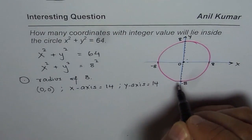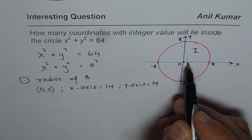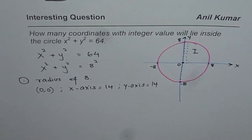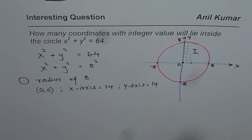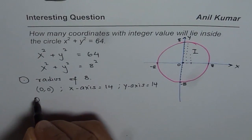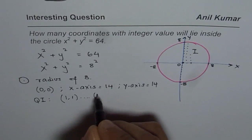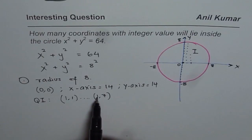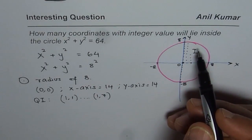To count the interior points, let us consider quadrant 1. Starting with x=1, we can have y from 1 to 7 since 1² + 7² = 1 + 49 = 50, which is less than 64, so it is within the circle. Similarly for x=2: 2² + 7² = 4 + 49 = 53, also within the circle, so again y goes from 1 to 7.